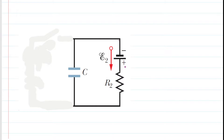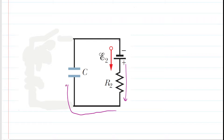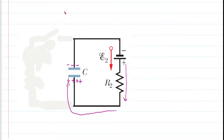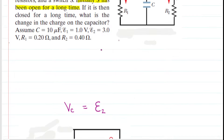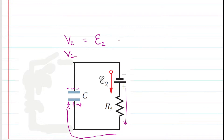If we let current flow through this circuit for a long period of time, current comes out of the positive terminal of the battery, works its way around, and starts depositing positive charges on one plate of the capacitor while the other plate becomes negatively charged. Eventually, after a long period of time, the potential difference across the capacitor plates equals the potential difference across the battery terminals — which is 3 volts.